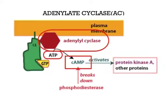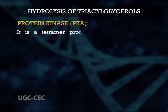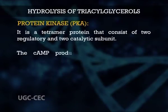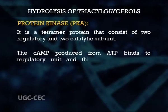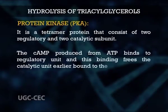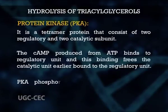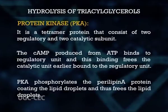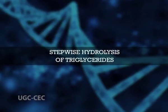Cyclic AMP in turn activates protein kinase A (PKA), a tetramer protein consisting of two regulatory and two catalytic subunits. The cyclic AMP produced from ATP binds to the regulatory subunits, freeing the catalytic subunits. PKA then phosphorylates the perilipin A protein coating the lipid droplets, thus freeing the lipid droplets. Lipase enzymes belong to the esterase class of hydrolysis enzymes, which hydrolyze triglycerides by acting on the glycerol backbone.